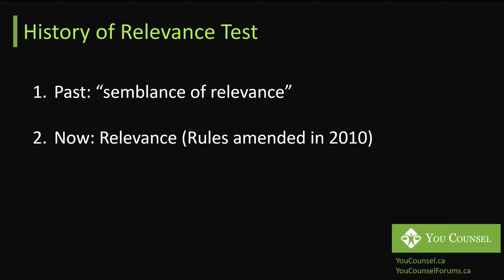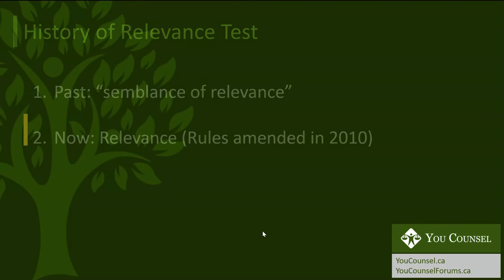Another reason was that courts wanted to deal with issues efficiently. With a narrower definition, all relevant documents are produced and irrelevant documents don't waste courts', parties' time, money, and effort in weeding through them. What you want to take away is that the definition is now narrower — either the document is relevant or it's not. The semblance of relevance test is no longer applicable.